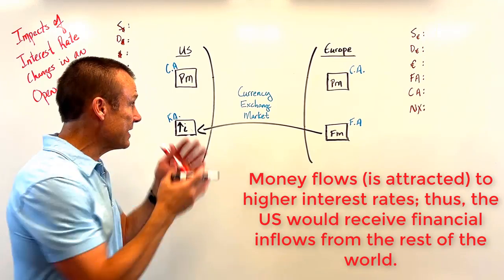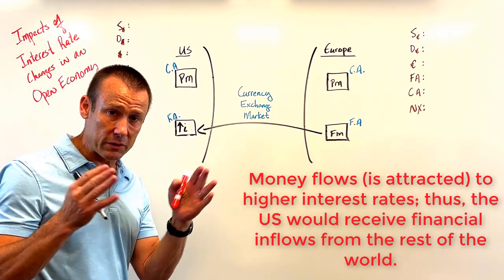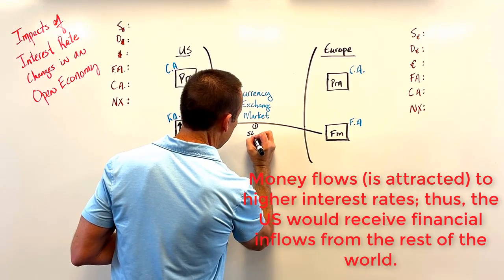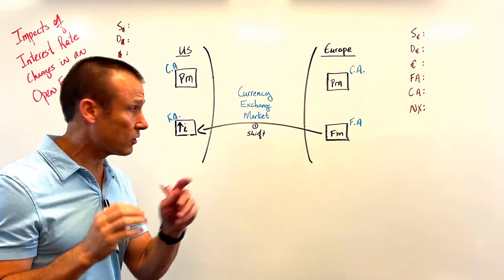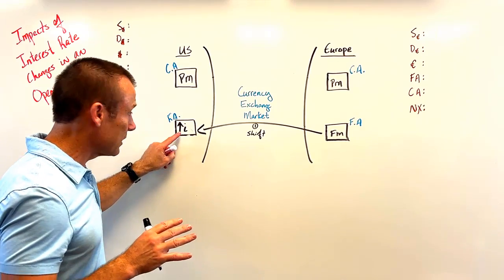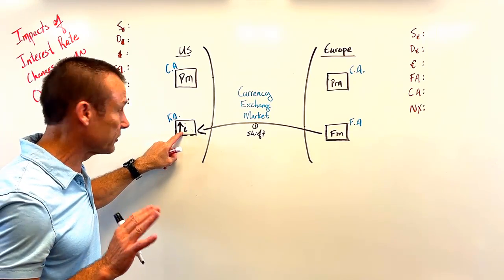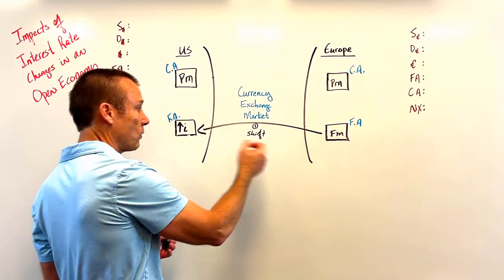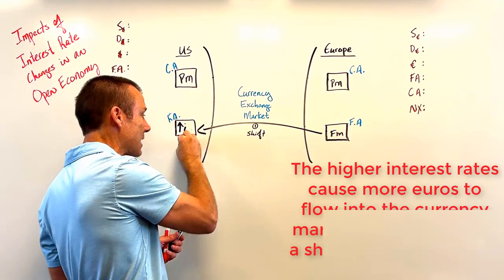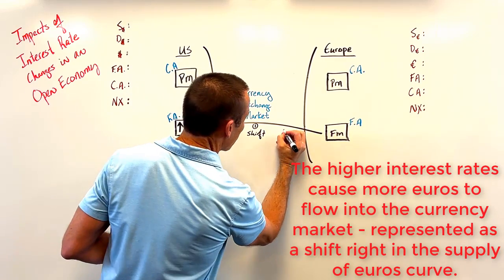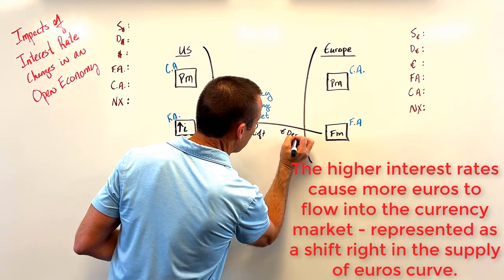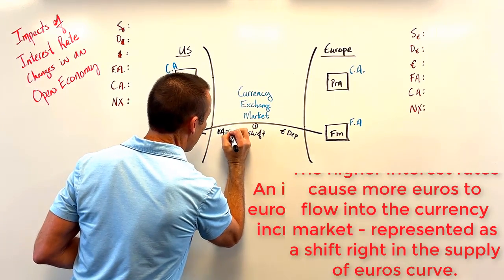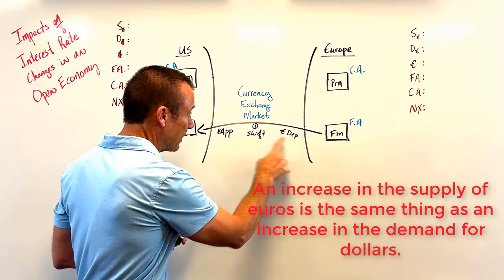In our currency exchange market, that capital inflow would cause the shifting of supply and demand curves. I put a little one right here to mark that shift — we're getting the shifting of the curves in the foreign currency exchange market because this exogenous variable, the interest rate, changed. Money is coming in; euros are flowing into this market demanding dollars, so you get that increase in the supply of euros. Of course, the euro is going to depreciate, and the dollar is going to appreciate.